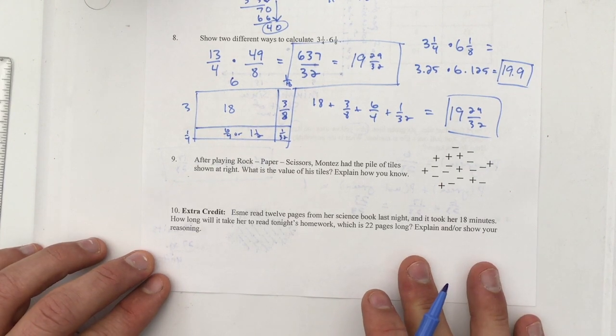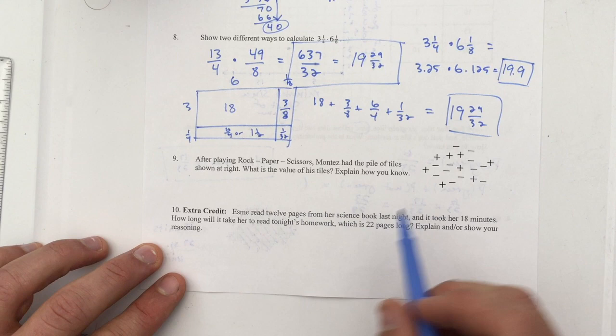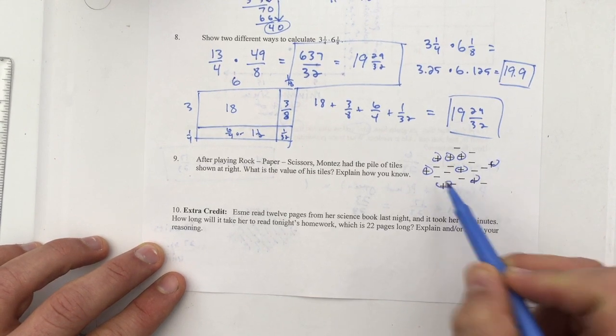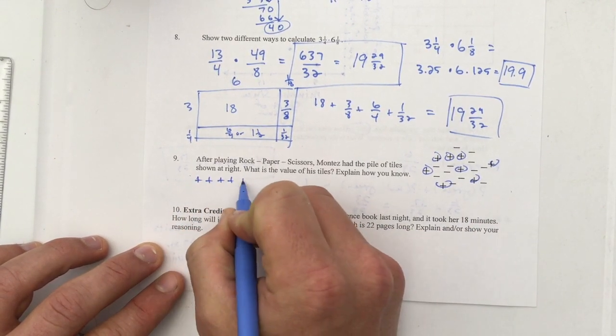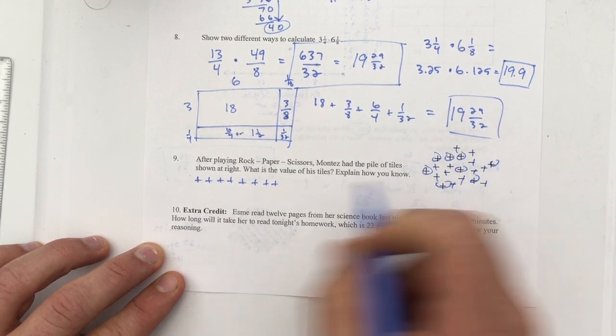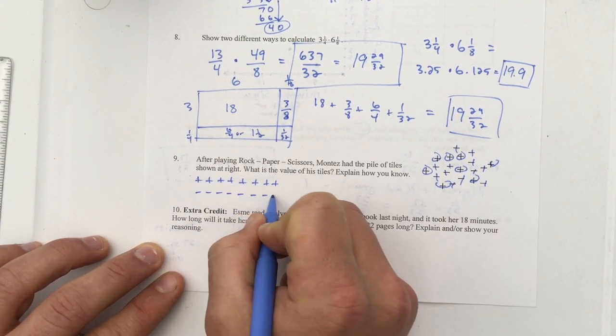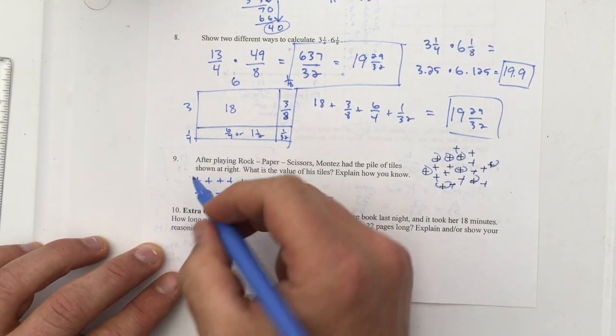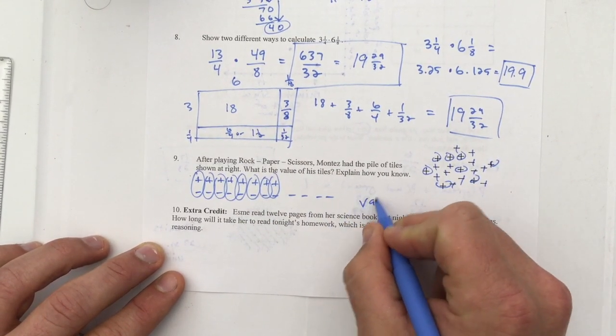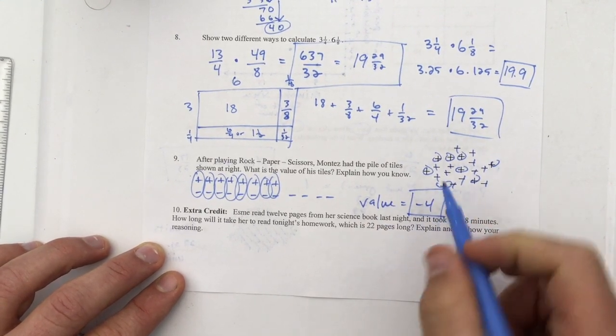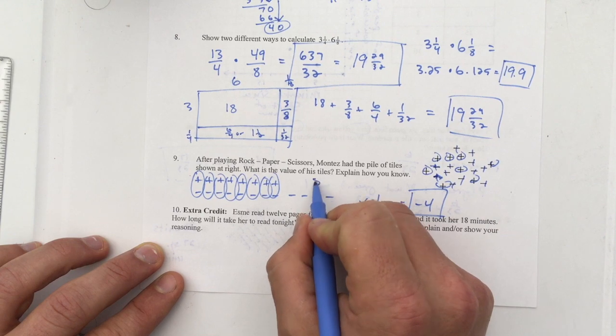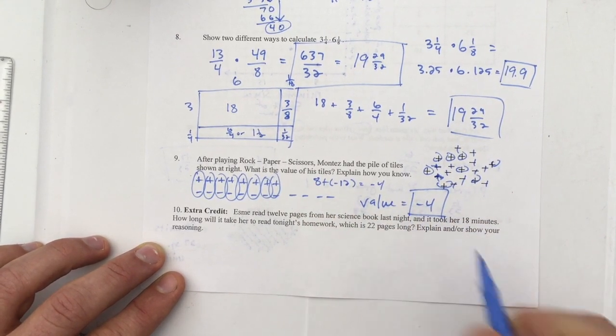Number nine. After playing rock, paper, scissors, Montez had the pile of tiles shown at right. What is the value of his tiles? Explain how you know. I'm just going to rewrite them in a nice line. We have one, two, three, four, five, six, seven, eight positive tiles and nine, ten, eleven, twelve negatives. Now I'm going to make zero pairs. And I'm left with negative four. So the value equals negative four. I didn't need to make these pluses. I was just verifying that I counted them. Explain how you know. You could have also written this out. I saw a lot of people do this. This is eight plus negative twelve equals negative four. But there's your answer.